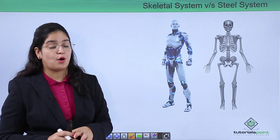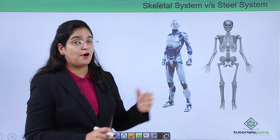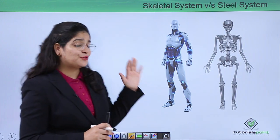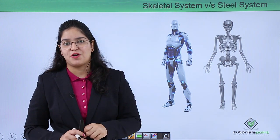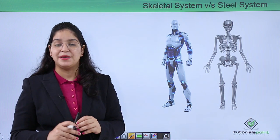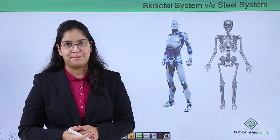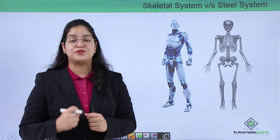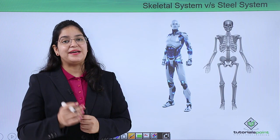Now let's compare our skeletal system with a steel frame — the structure which is made up of steel. Did you know our skeletal system is five times stronger than steel, but at the same time it is one-sixth the weight of steel? That is why our body is so perfect for moving, jumping, and any other activity.